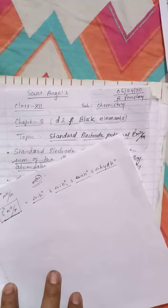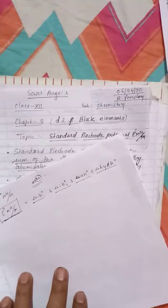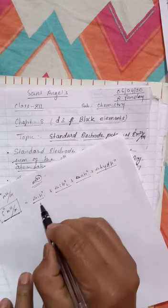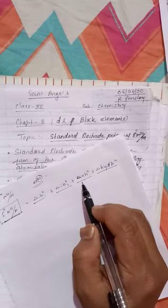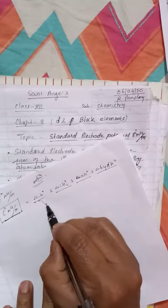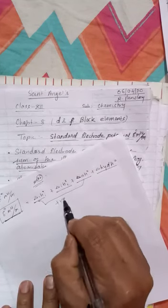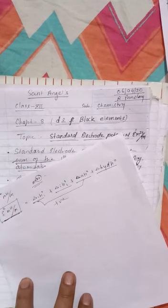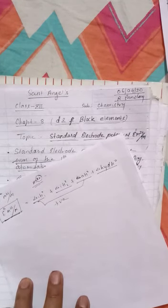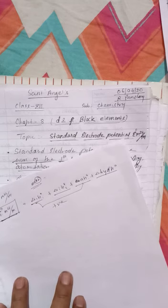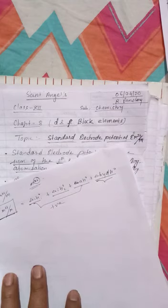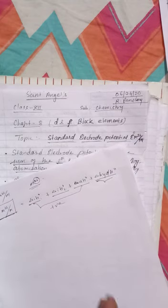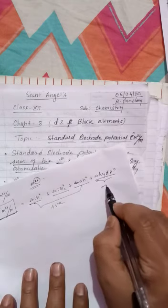For the +2 oxidation state, the first ionization enthalpy, second ionization enthalpy, and atomization enthalpy are always positive because they require some amount of energy — meaning these processes are endothermic. But hydration enthalpy always releases some amount of energy, therefore this value will be negative.